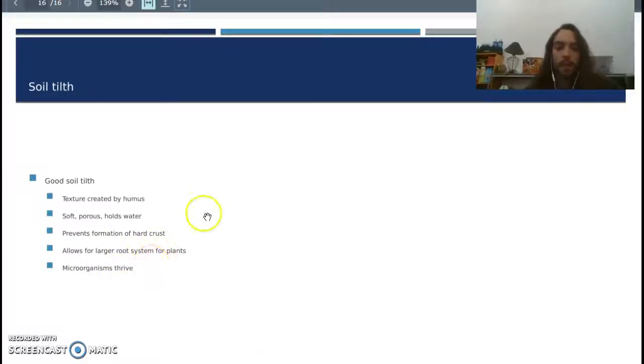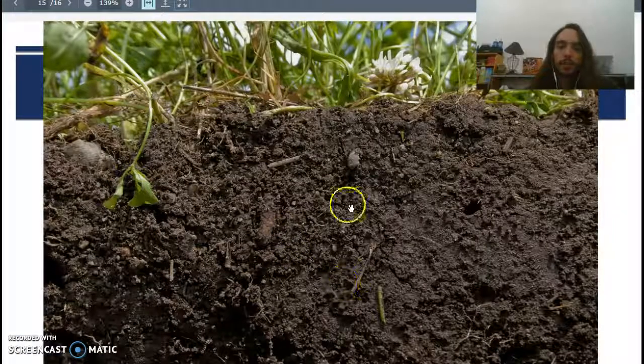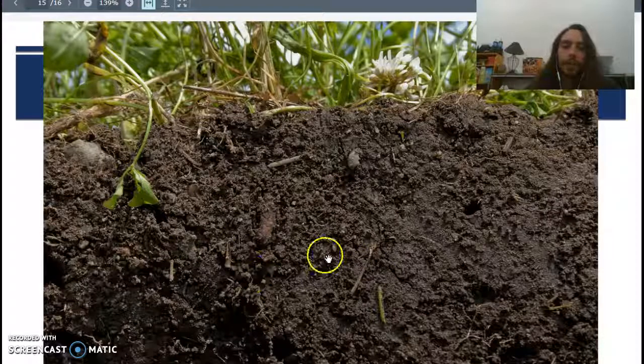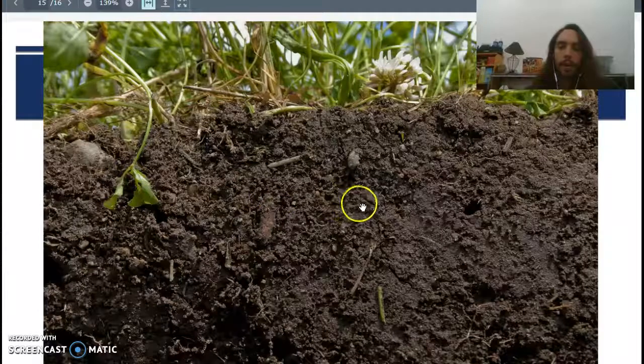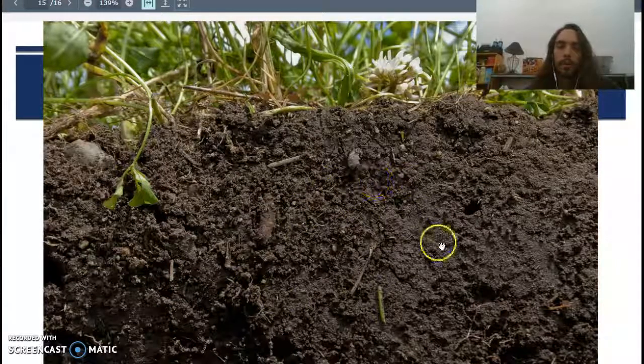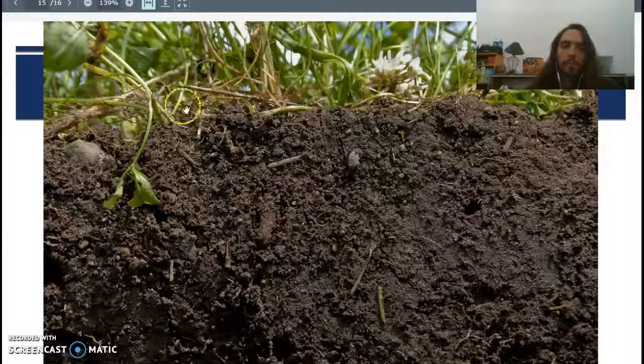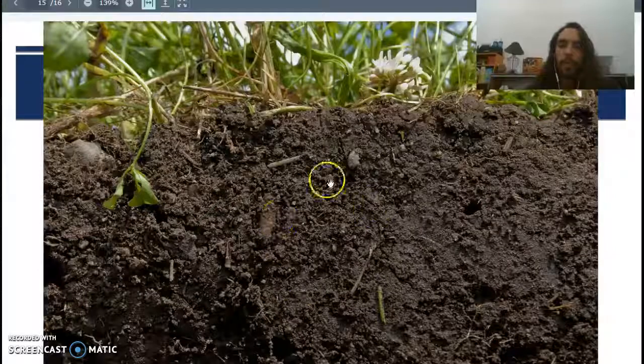Good soil tilth allows for a larger root system for plants and microorganisms thrive. So if you learn anything about soil, microorganisms are basically what makes soil good, makes it healthy. Those are the things that are continuously degrading organic matter, they're decomposing it, they're turning that into carbonic acid essentially. That's going to break down nutrients in the soil, and then it's going to go back up into the plants. The plants are going to die, they're going to do that same process over and over and over again.